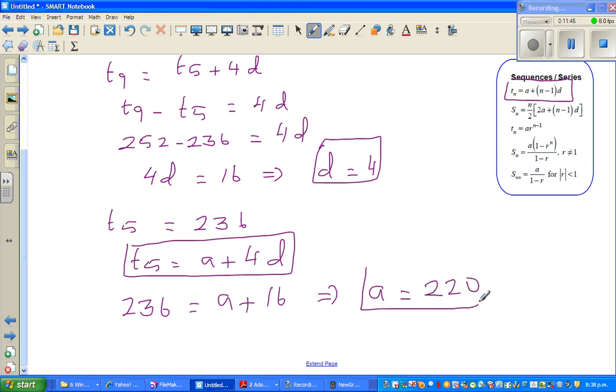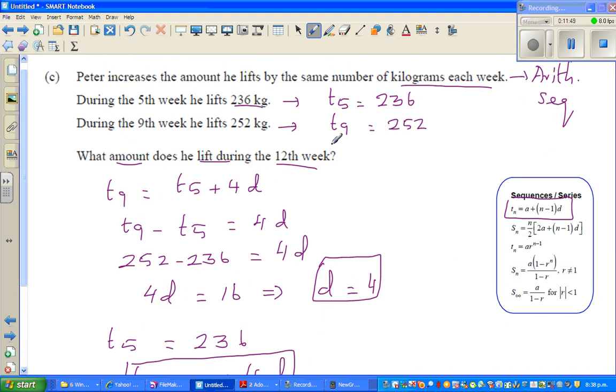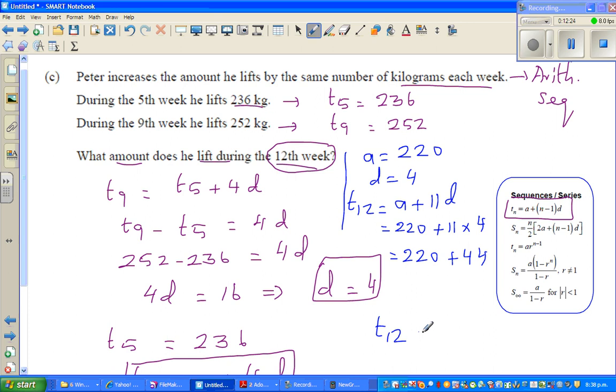Now, my question is, you want to find how much he lifts in the 12th week. Let me finish it here. I know a is 220 and d is 4. So I can say t12, if I put in this formula, is a plus 11d. You have to go 1 less than n. Which is 220 plus 11 times 4, which is nothing but 220 plus 44. So t12—on the 12th week, Peter is lifting 264 kg. That's your answer.